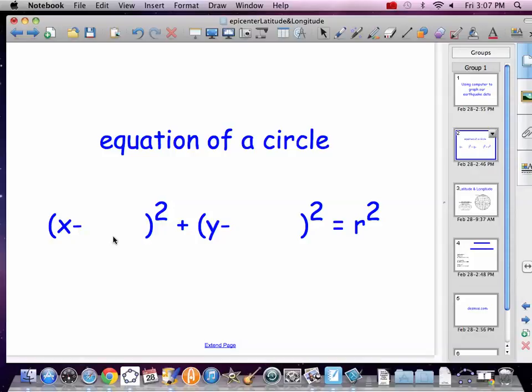Plus or minus some number for moving it right or left, plus or minus some number for moving it up or down, and then r is the radius of our circle squared.